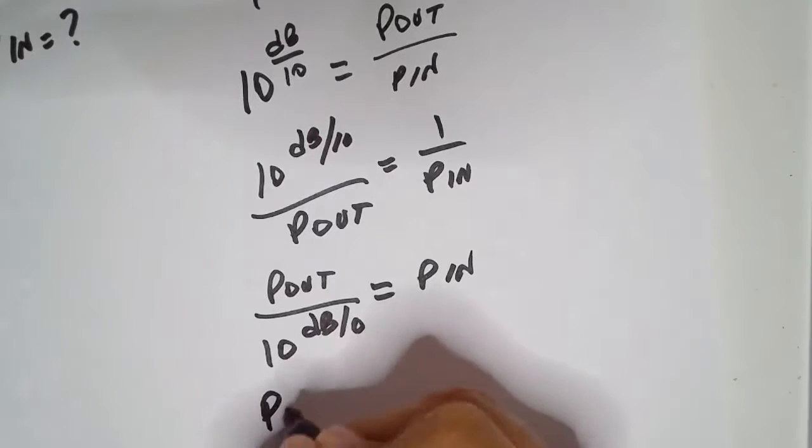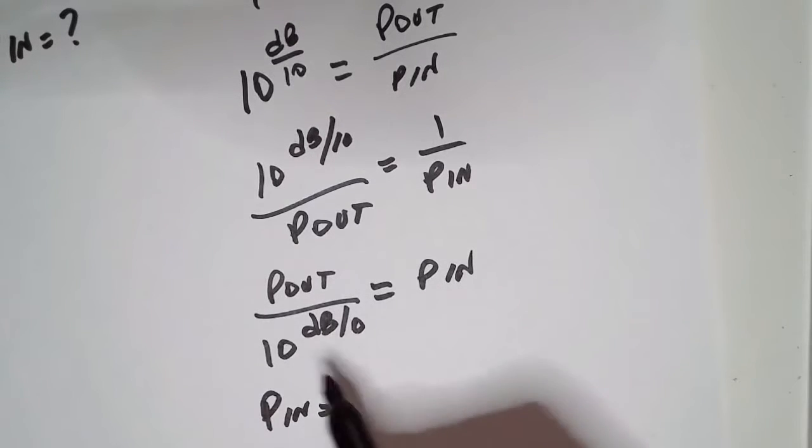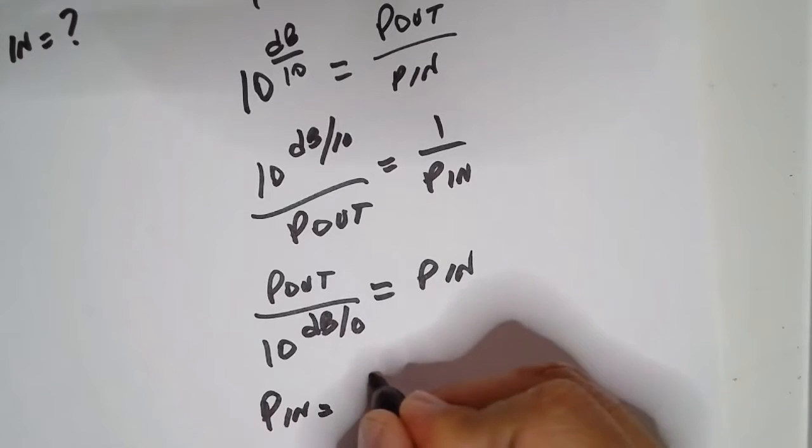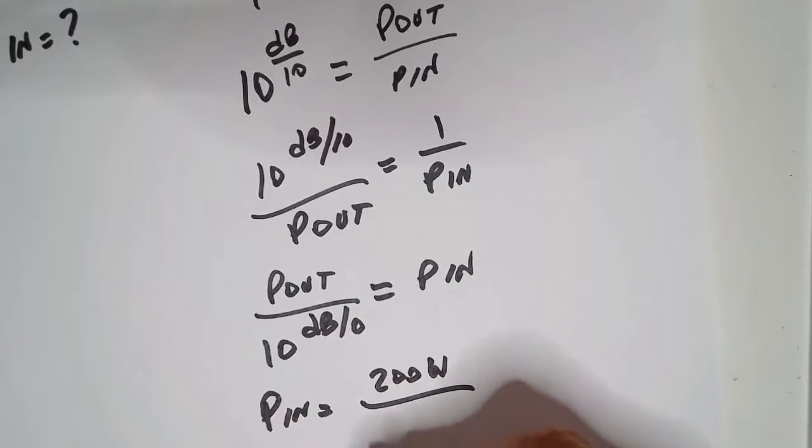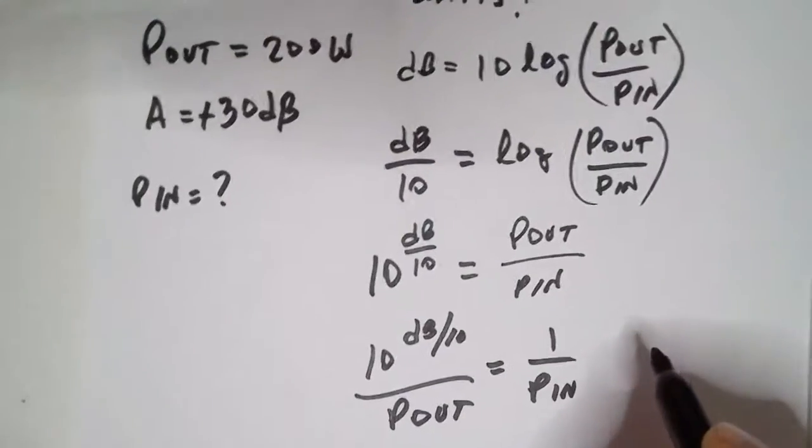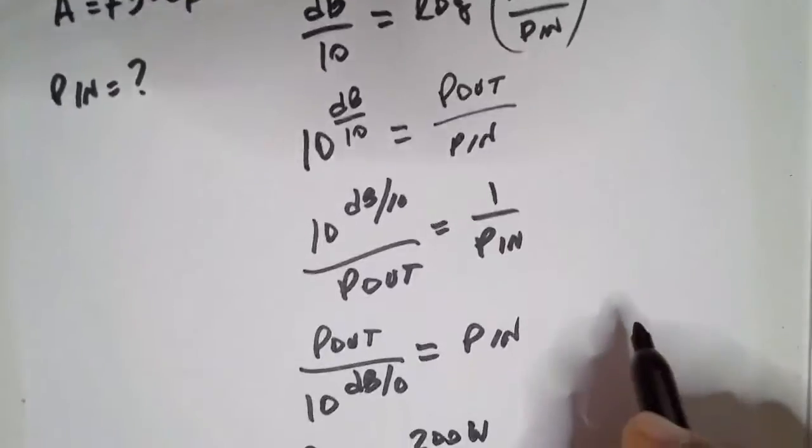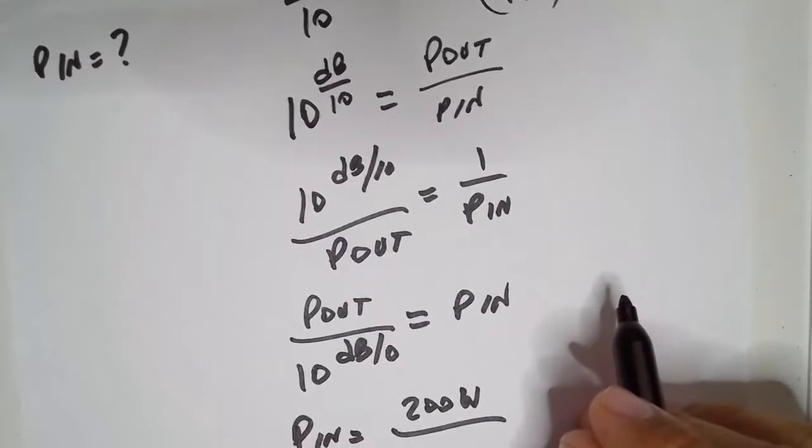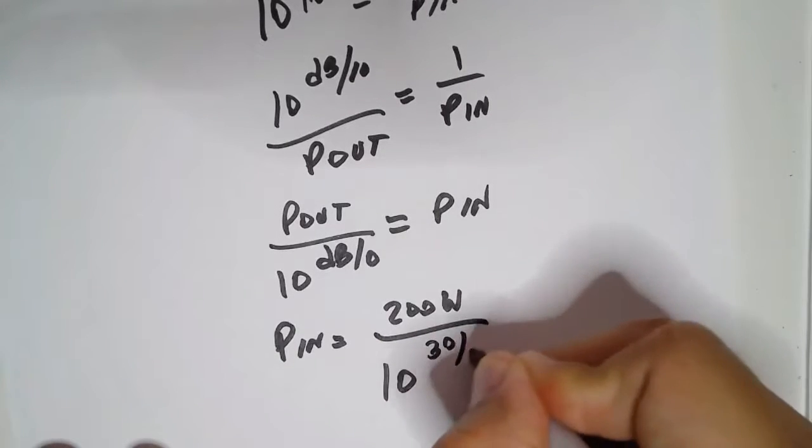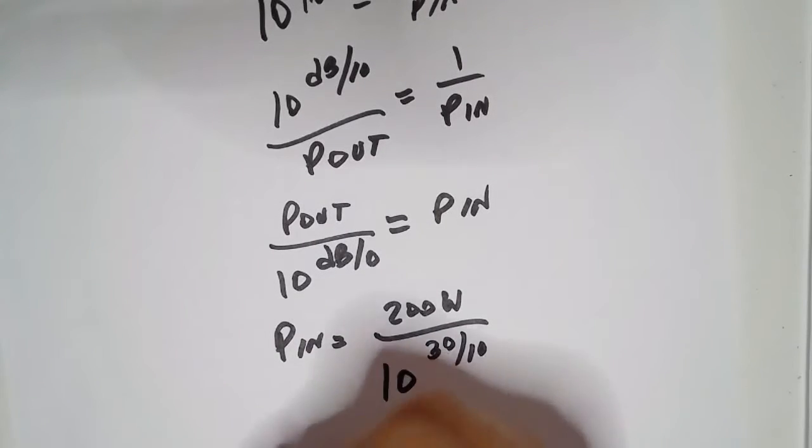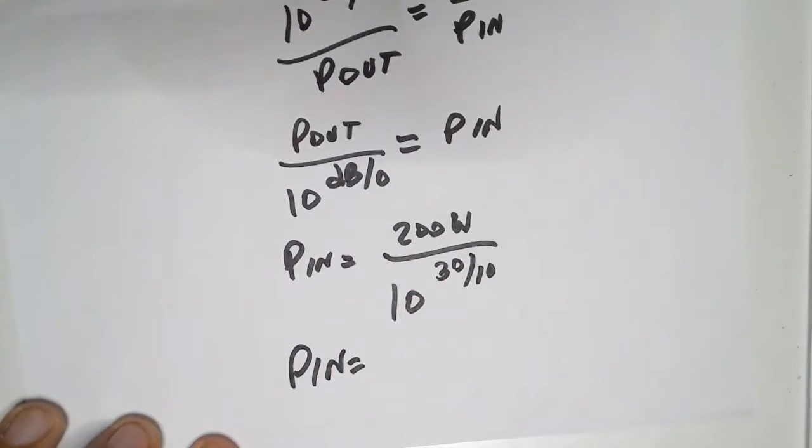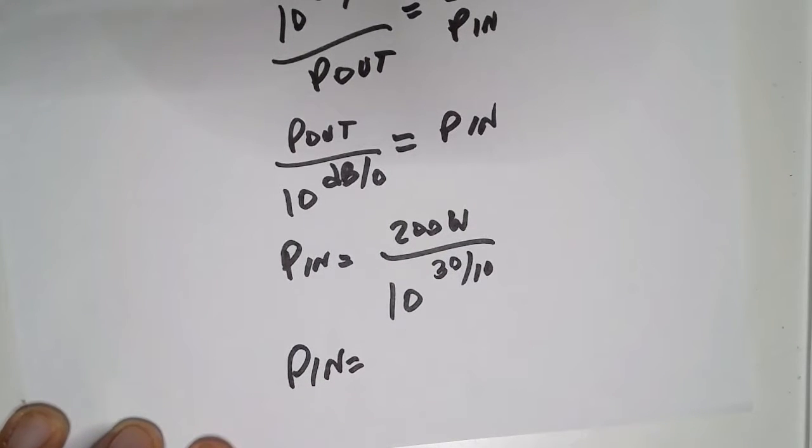Now we can plug in our numbers. P out equals 200 watts, and dB is 30 dB over 10. Finally, for our answer, let's use the calculator.